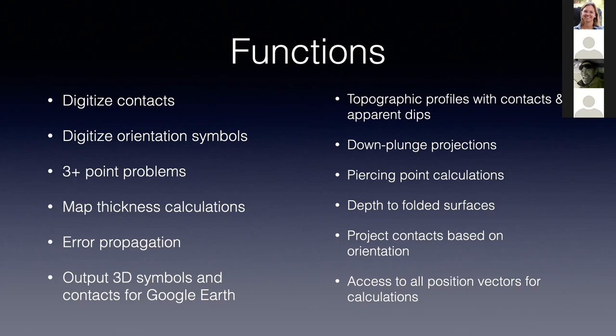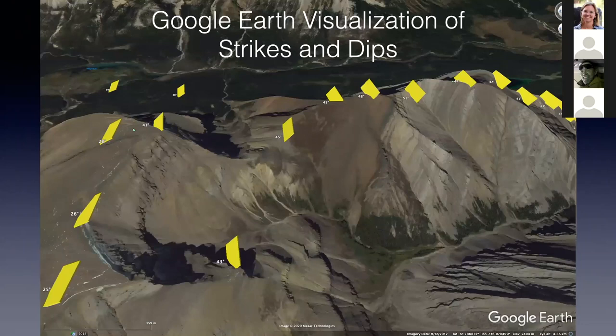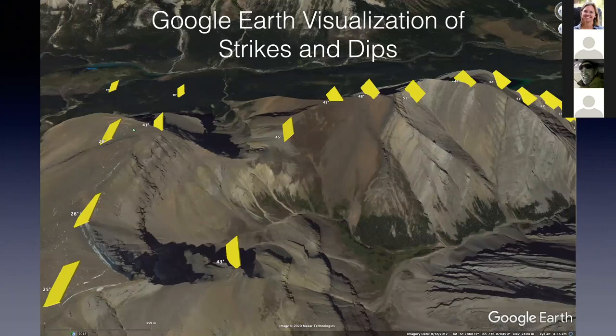Rick has a free lab manual on his webpage, and several exercises have students capture position vectors from GMDE and then do their calculations in a spreadsheet program. Here's a picture of the output to Google Earth from the area of the Canadian Rockies he'll be demoing, showing how the mapped geologic contacts and orientations from those map contacts actually look on Google Earth imagery from this part of southern Canada.